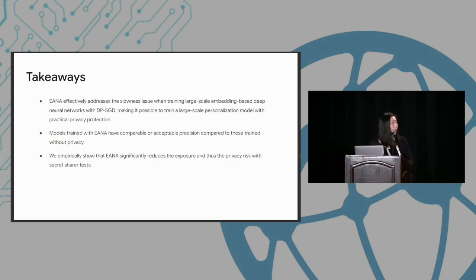And these are final takeaways. And in summary, we propose IANA to address the slowest issue when training large-scale embedding-based deep neural networks. And we conclude that IANA can actually unblock training of such models and provide decent practical privacy protection. And that's all. Thank you.